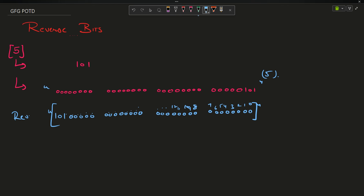...28, 29, 30, 31. So the answer will be 2 to the power 31 plus 2 to the power 29, which equals 2 to the power 29 multiplied by (4 + 1), that is 5 times 2 to the power 29. This will be the answer. You can compute 2 to the power 29 easily in C++ using the power function.